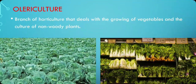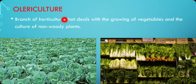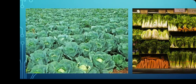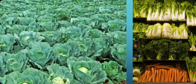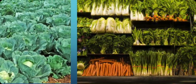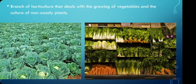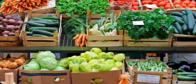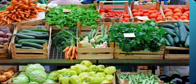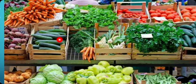The first division is Olericulture. It is a branch of horticulture that deals with the growing of vegetables and the culture of non-woody plants. It includes different non-woody plants like cabbage, cauliflower, radish, carrot, and leafy vegetables. It can be any part of the plant — root, stem, tuber, or leafy part — all of which we consider as vegetables are in the category of Olericulture.